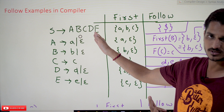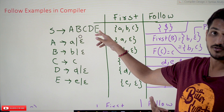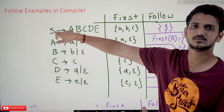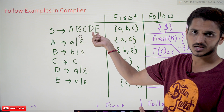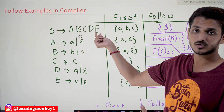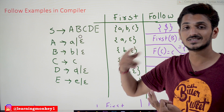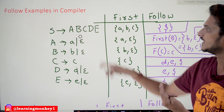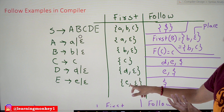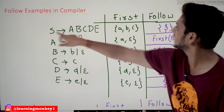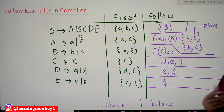So FOLLOW of C equals FIRST of D, plus FIRST of E (since D can derive epsilon), plus FOLLOW of S (since E can also derive epsilon). FIRST of D is d, FIRST of E is e, and FOLLOW of S is dollar. Therefore FOLLOW of C is {d, e, $}.